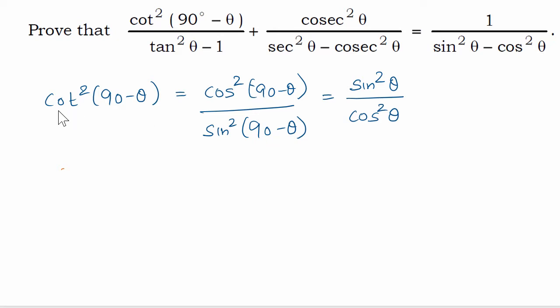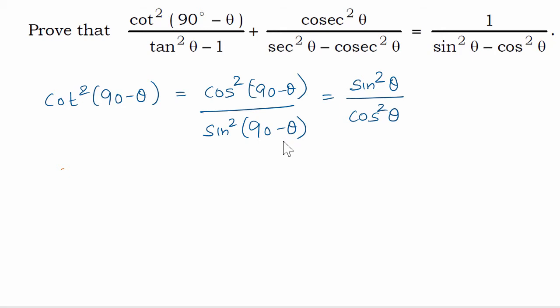First, we need to remember that cot theta is cos theta divided by sin theta. So cot square 90 minus theta will be the same as cos of 90 minus theta divided by sin of 90 minus theta, which means cot square 90 minus theta equals cos square 90 minus theta divided by sin square 90 minus theta. This is simply the definition of cot theta.